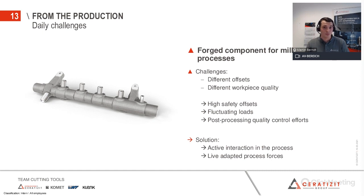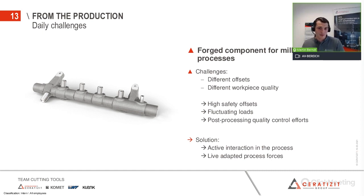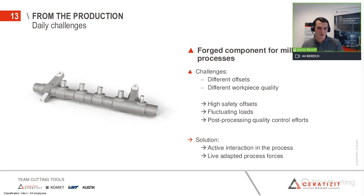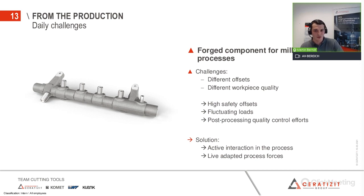Here we talk about a forged component in a milling process. The challenge is that fluctuating stock offsets have a significant influence on the milling process. Different workpiece qualities from pre-machining also influence the process, resulting in very high safety offsets which can cause the tool to be little or not at all engaged. Fluctuating loads are the consequence and have a negative effect on tool lifetime. In addition, tools are not optimally used and still have a lot of potential. Quality control measurements are increased, incurring high costs. The solution here would be active interaction into the process to react live to process forces.